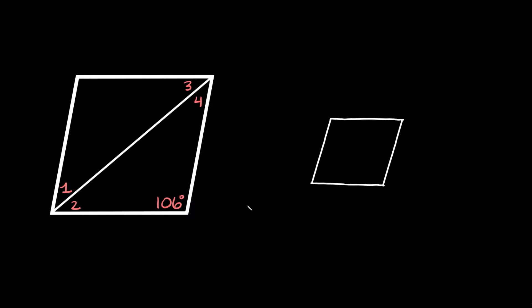Before doing that I just want to give you a couple quick tips. A rhombus is just a parallelogram where all the sides are congruent — they're all the same lengths. So all these sides are congruent.